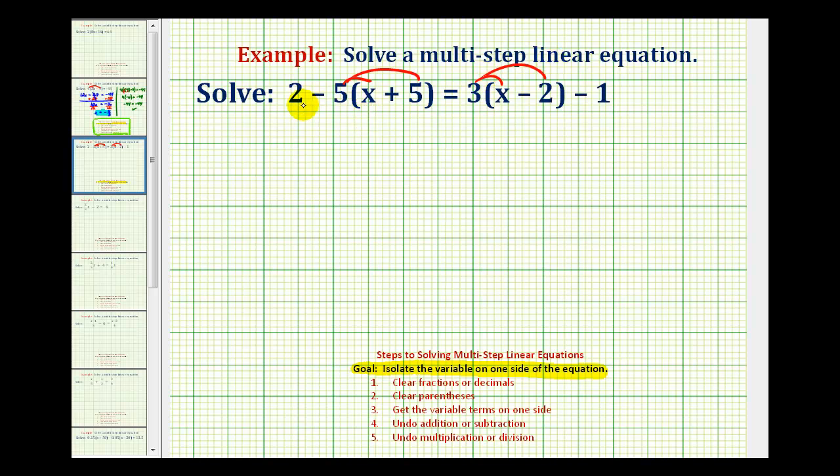We need to be careful here because of the minus sign. We would have two minus five times x, so we'll have minus five x, and then minus five times five which is twenty-five. And this would be equal to three times x or three x minus three times two, so we'll have minus six and then minus one.